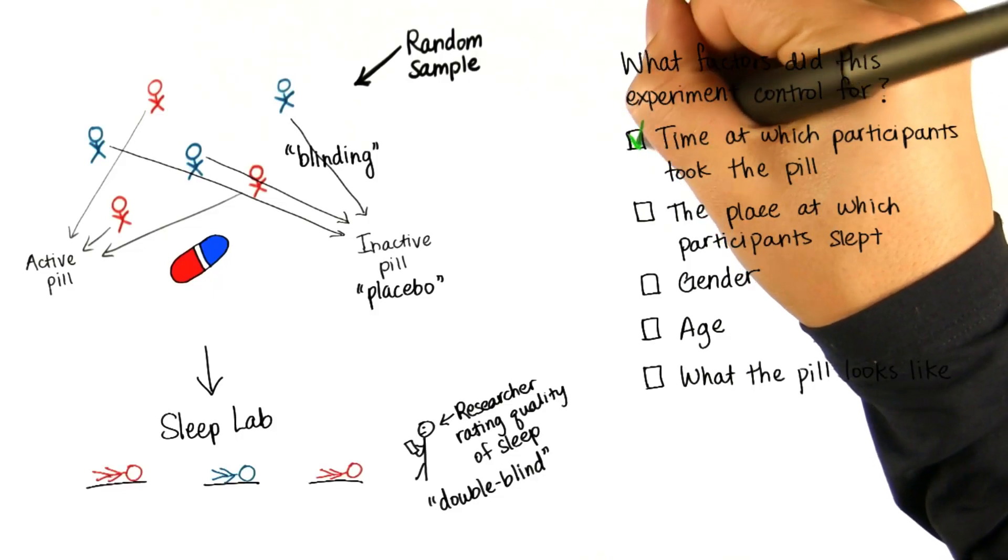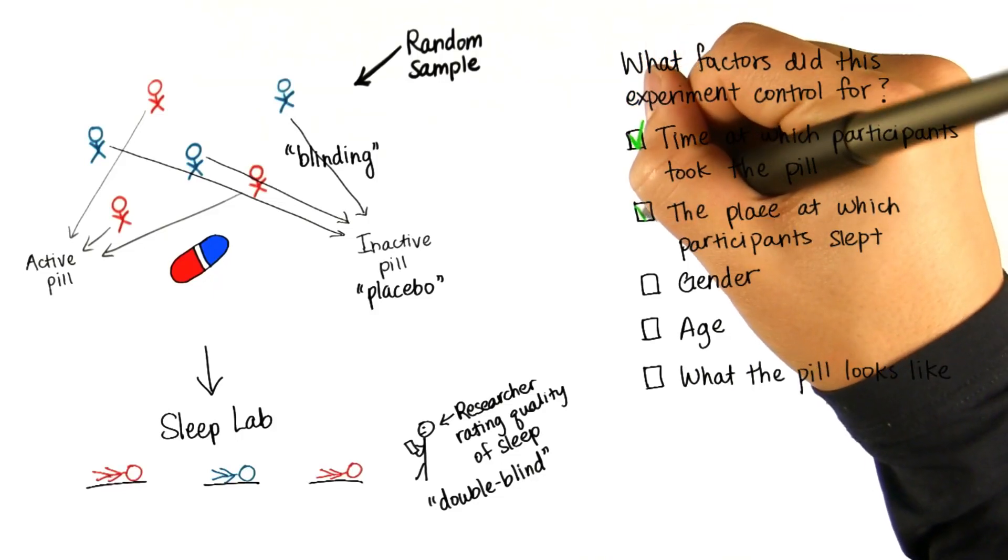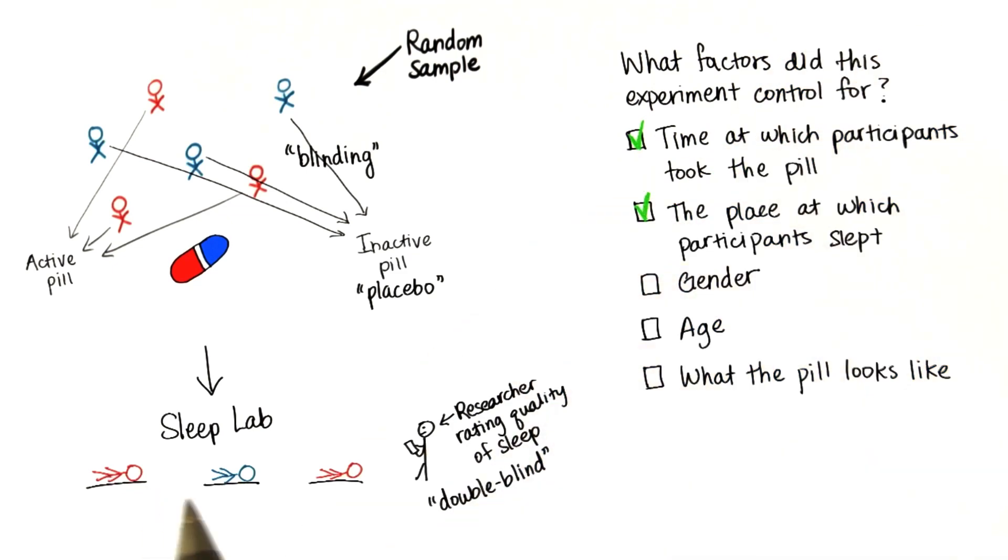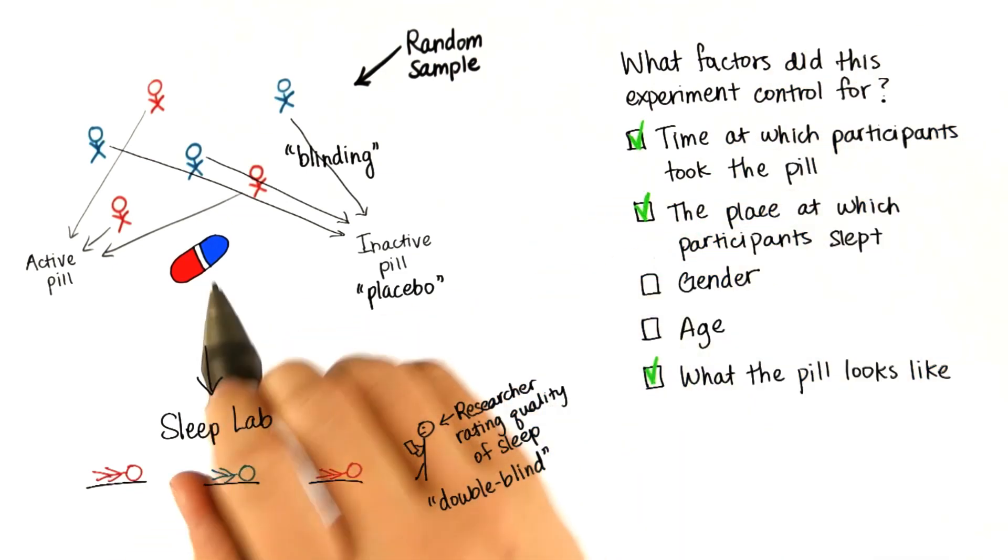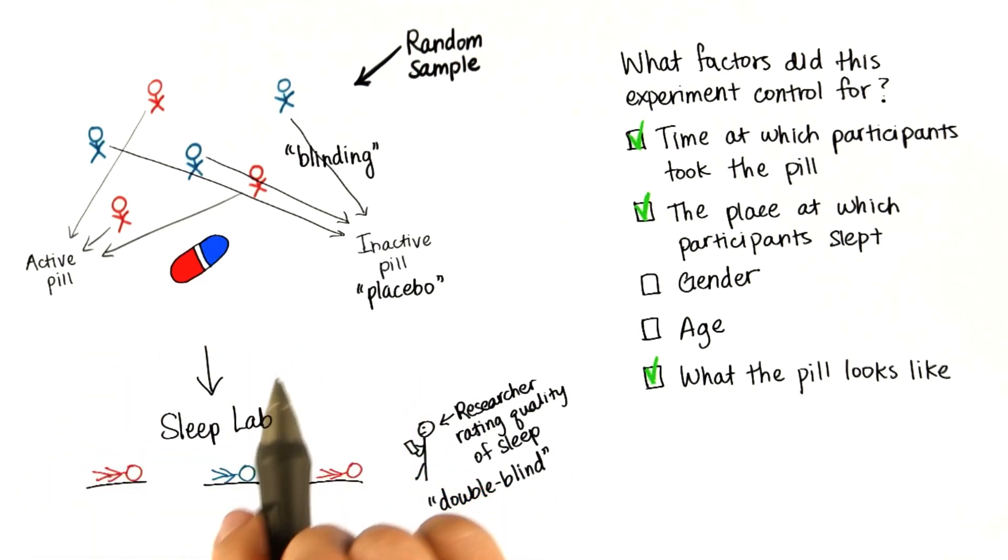We controlled for the time at which participants took the pill, the place at which they slept, because they all slept in the sleep lab, and what the pill looks like. It looks the same for both the active and the placebo.